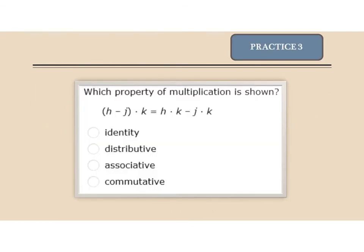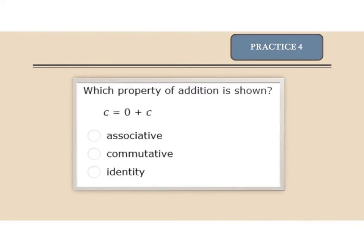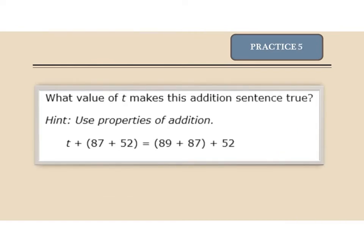Practice problem 3: which property of multiplication is shown below? Practice problem 4: which property of addition is shown? Practice problem 5: what value of t makes this addition sentence true? Hint — use the properties of addition. It is the associative property of addition, but just look at the numbers and see which one is missing that would make that sentence true.